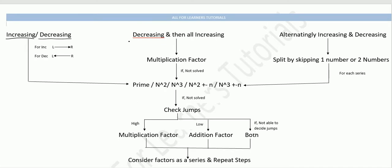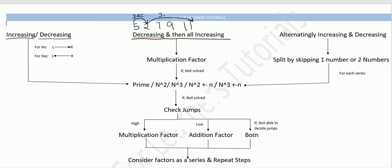But if the series is first decreasing and then further increasing, that is a different case. For example, a series like: 5, 2, 7, 9, 11 — here the first part is decreasing and then all subsequent terms are increasing.